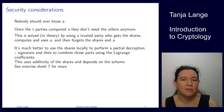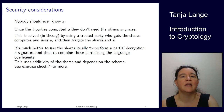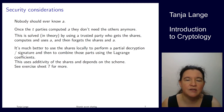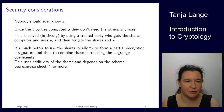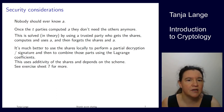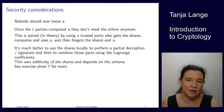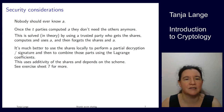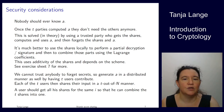We still have the problem that at the very beginning, somebody may have known a. This might be acceptable in some cases — for example, a bank owner who can sign alone but also wants five employees together to be able to sign. But in a normal t-out-of-n scheme where all shares are equal, nobody should ever have known a. Fortunately, we can generate a in a distributed manner.